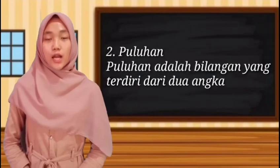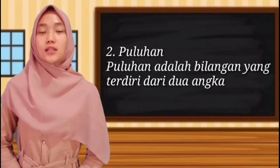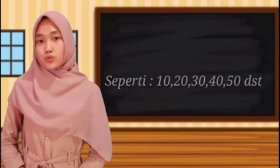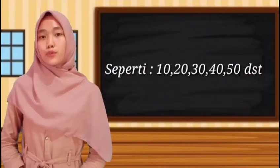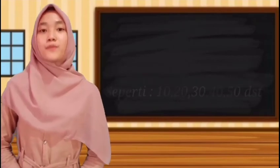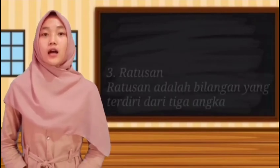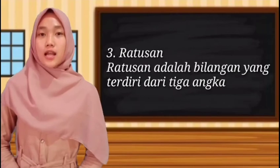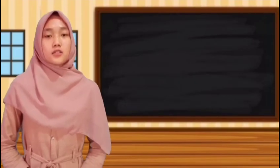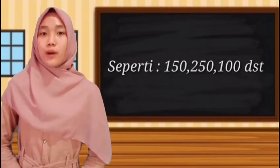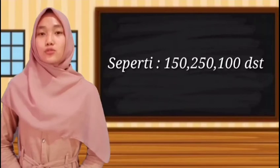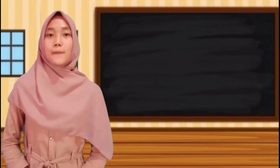Yang kedua puluhan. Puluhan adalah bilangan yang terdiri dari dua angka, seperti 10, 20, 30, 40, 50, dan seterusnya. Yang ketiga ratusan. Ratusan adalah bilangan yang terdiri dari tiga angka, seperti 150, 250, 100, dan seterusnya.